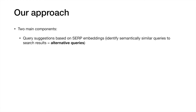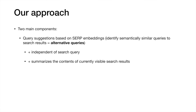Our approach consists of two main components. The first component generates query suggestions using an embedding model of search engine results pages — instead of identifying semantically similar queries to the original search query, we generate query suggestions based on what search results are currently on screen. We refer to these as alternative queries to distinguish them from query reformulation, which only considers documents at the top of the ranking. These query suggestions are independent of the original search query and function like keyword summaries of the documents currently on screen, answering the question: what am I looking at right now — showing users whether they've scrolled past all the documents relevant to their search intent.